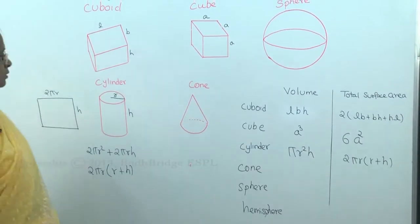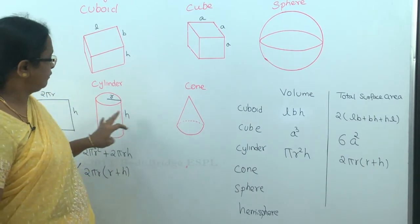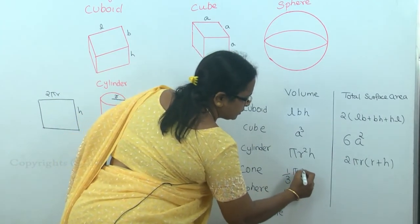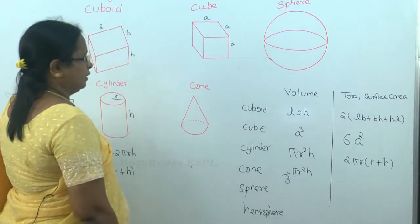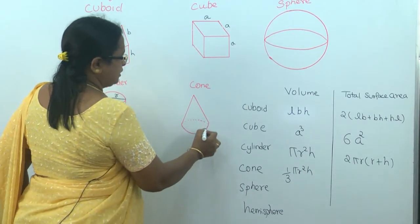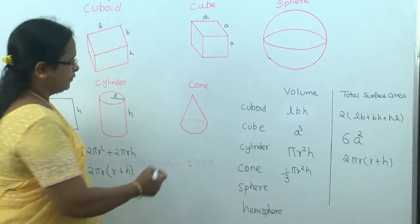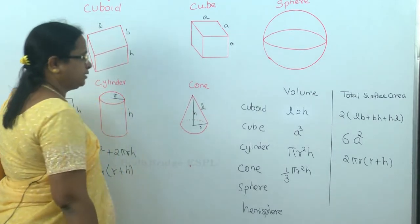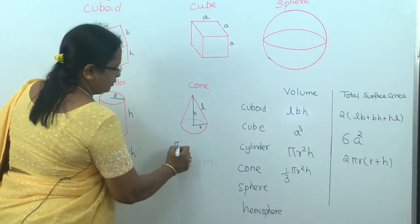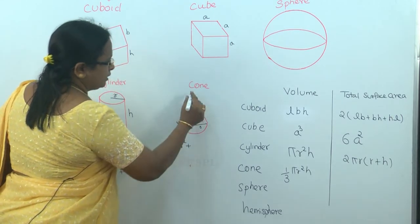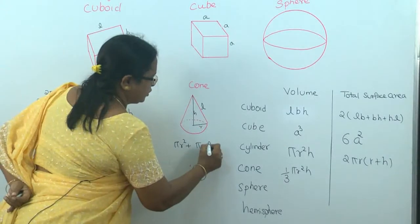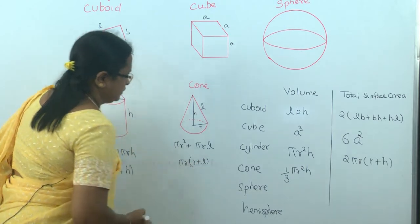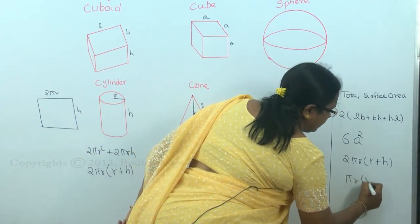For a cone with radius R, height H, and slant height L, the volume is one third of the cylinder, which is (1/3)πR²H. The total surface area is the base circle πR² plus the conical surface πRL, giving πR(R + L).